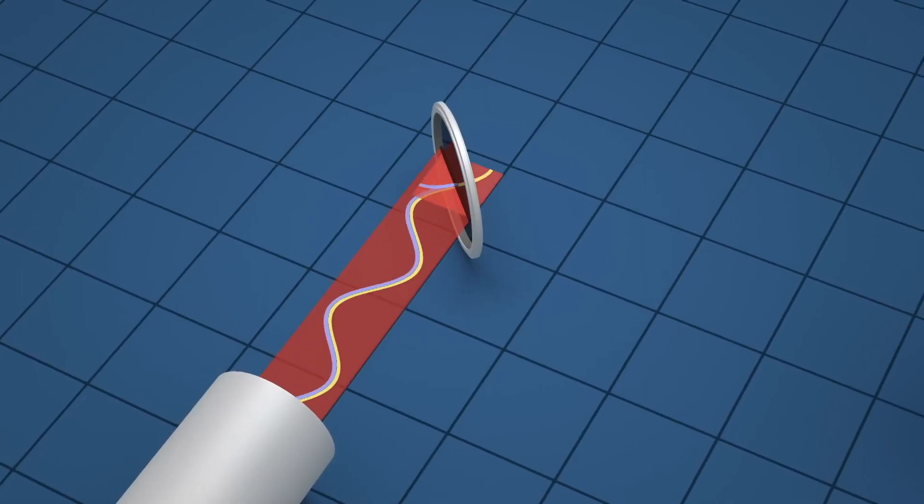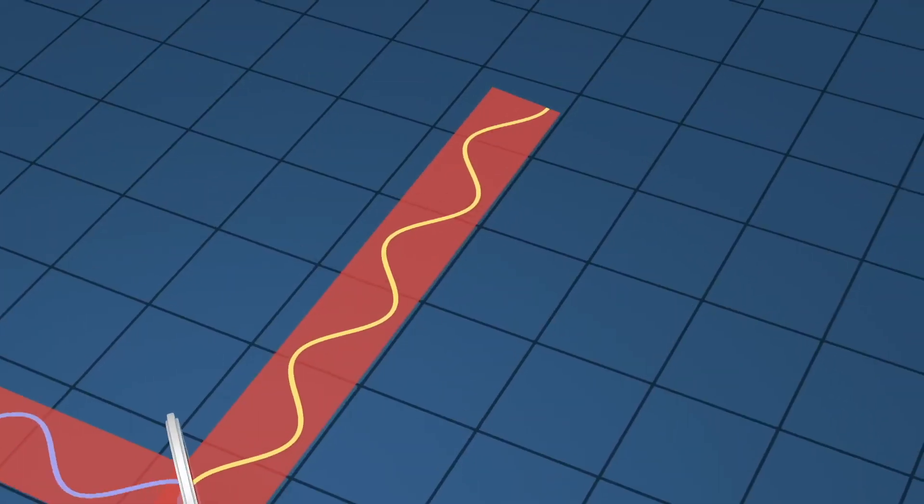Interferometer means you have mirrors which are separated by several kilometers and you have one mirror in the east-west direction and another two mirrors in the north-south direction and you have a laser light which bounces between those mirrors.